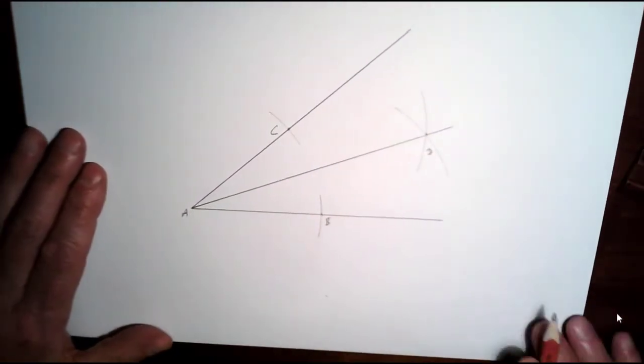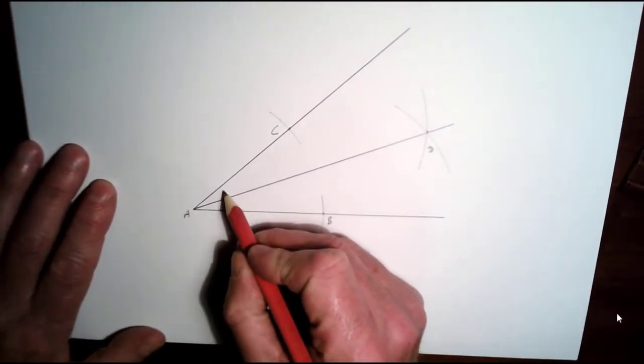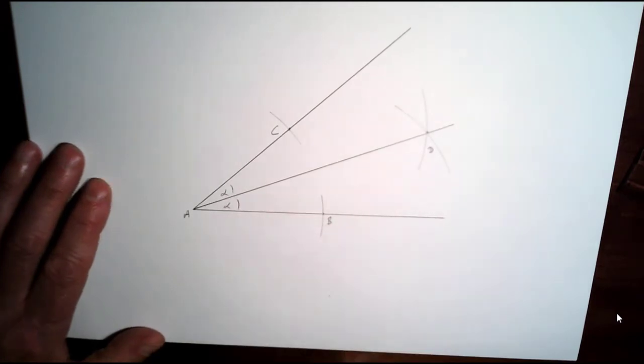So we've joined D up to A here, and you should find that this angle here and this angle here are the same.